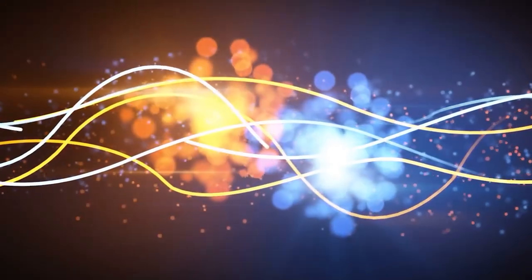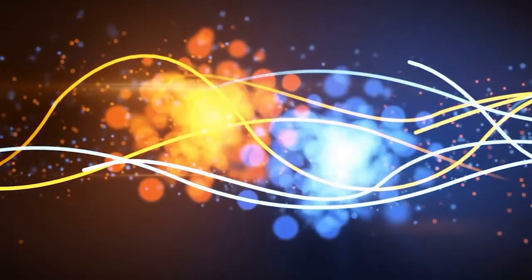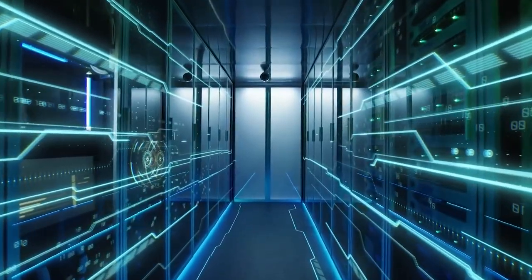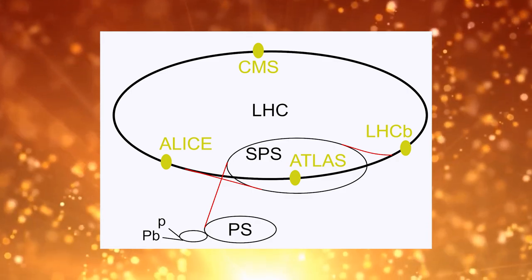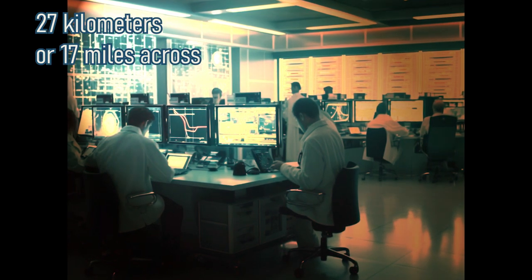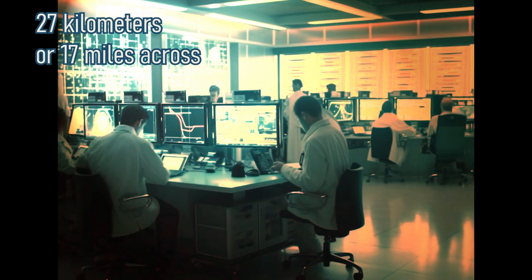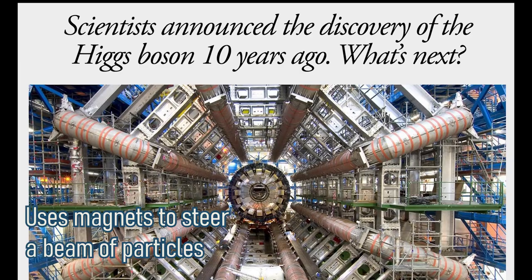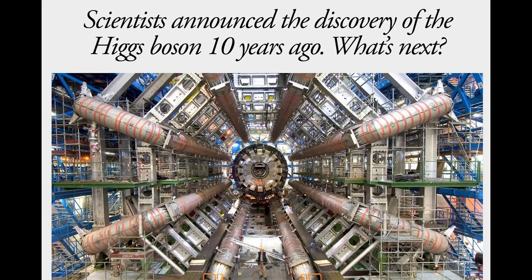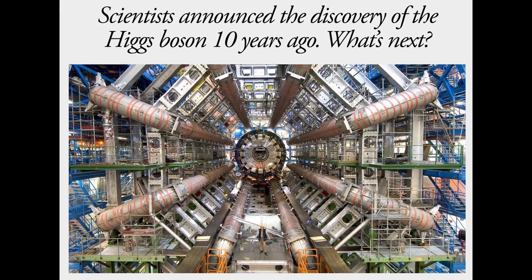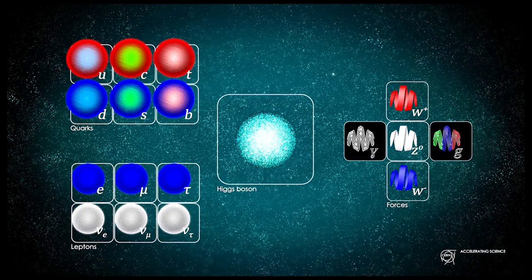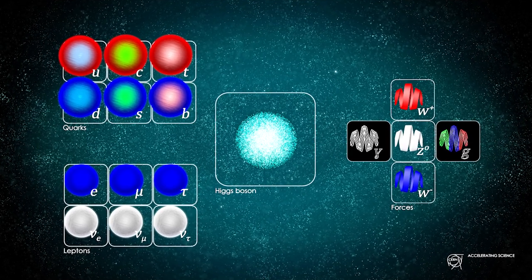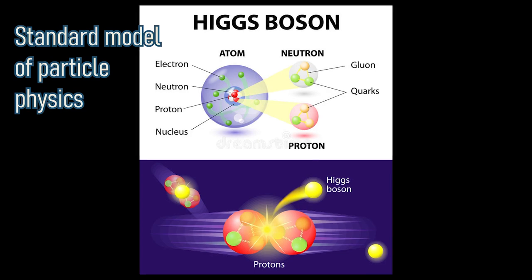The LHC is designed to accelerate protons and heavy ions to almost the speed of light and then collide them together, producing new particles that can be studied by physicists. The collisions take place in four main detectors: ATLAS, CMS, LHCb, and ALICE. The Large Hadron Collider is a circular tunnel that is 27 kilometers, about 17 miles, in circumference and located 100 meters or 330 feet underground. And it uses powerful magnets to steer beam of particles around the ring and radiofrequency cavities to accelerate them. The Higgs boson was first observed by the ATLAS and CMS detectors at the Large Hadron Collider in 2012. Its discovery confirmed the existence of the Higgs field, a crucial piece of evidence supporting the standard model of particle physics.